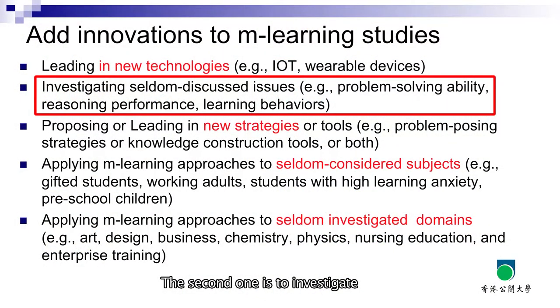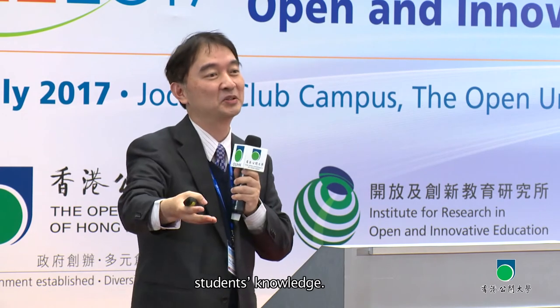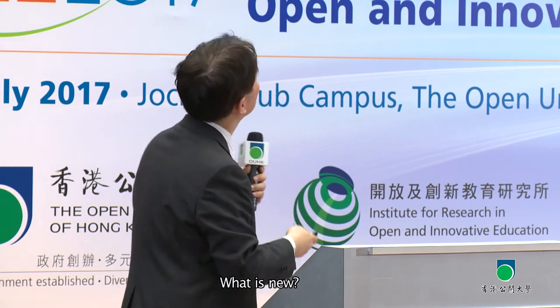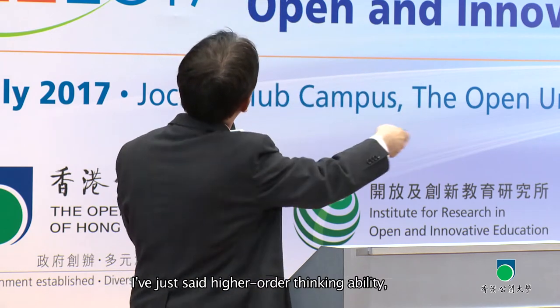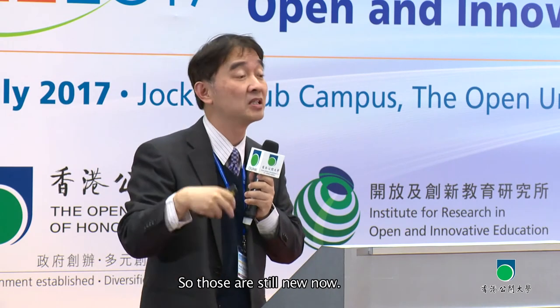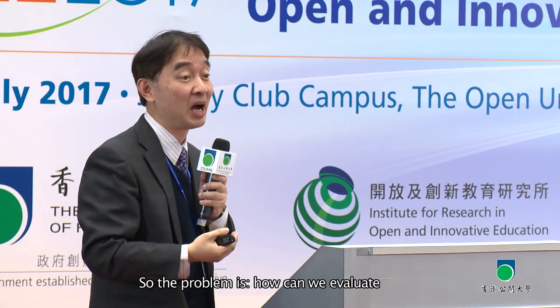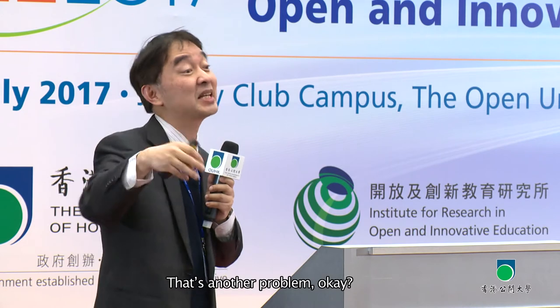The second strategy is to investigate seldom-discussed issues. Motivation? No — many people have discussed that. Attitude? No. Learning achievement? Almost every study tests that. What is new? Higher-order thinking ability, such as problem-solving ability, learning behaviors — highly related to learning analytics. Those are still new now. The challenge is how to evaluate students' higher-order thinking.